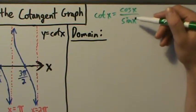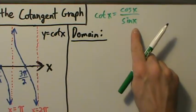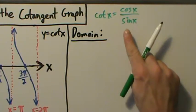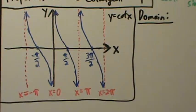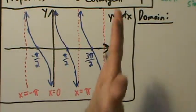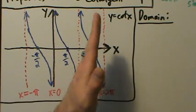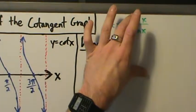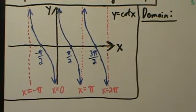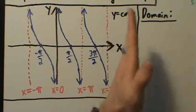But when you start dividing, you have to make sure the denominator is not zero. Sine of x is zero whenever x is 0, pi, negative pi, 2 pi, negative 2 pi, 3 pi, negative 3 pi, and so on. At exactly those values we have vertical asymptotes, because dividing a non-zero number by zero means you have a vertical asymptote.